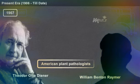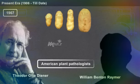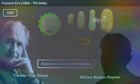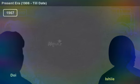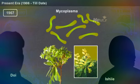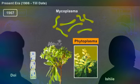In 1967, Theodor Otto Diener and William Benton Raymer, American plant pathologists, identified that potato spindle tuber disease was caused by small, single-stranded circular molecules of infectious RNA known as viroids. Also in 1967, Japanese scientists Doi and Ishii independently observed and reported mycoplasma-like organisms (MLOs), now called phytoplasma, in the phloem of plants exhibiting yellows and witches' broom symptoms.